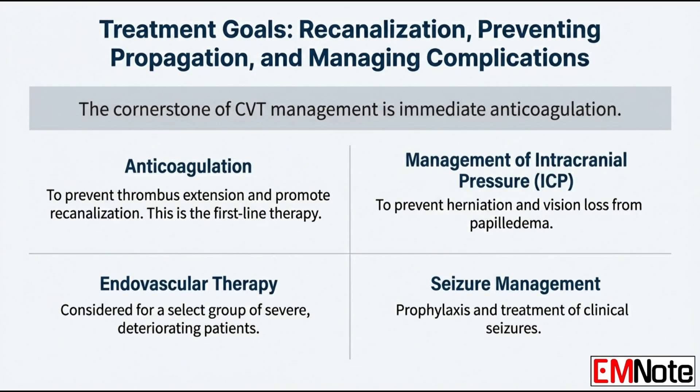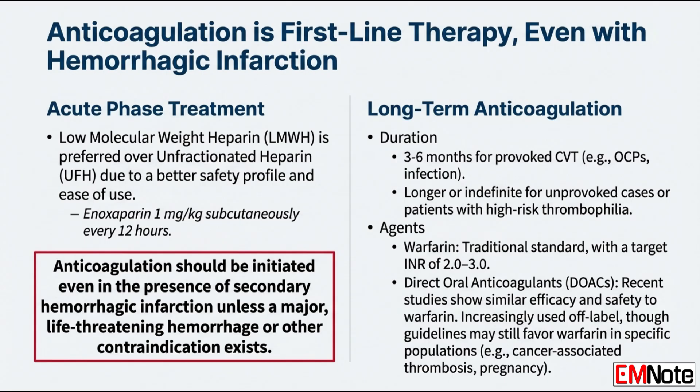Once CVT is confirmed, acute anticoagulation is the standard first-line treatment. Low molecular weight heparin, LMWH, or unfractionated heparin is first-line therapy — and yes, it must be initiated even if imaging shows hemorrhagic infarction. The pathophysiology is obstruction; the hemorrhagic conversion is often secondary to venous hypertension. The benefit of preventing clot extension and promoting reperfusion outweighs the risk of secondary bleeding. Anticoagulation despite hemorrhage is a clinical mandate for CVT.